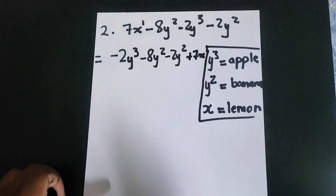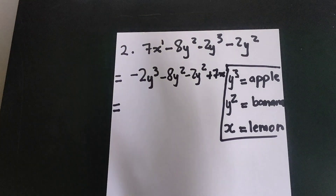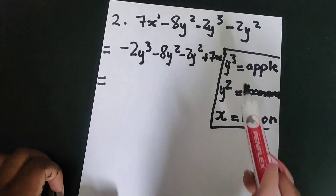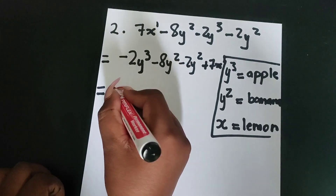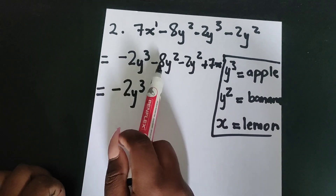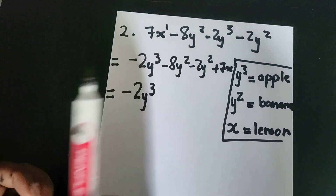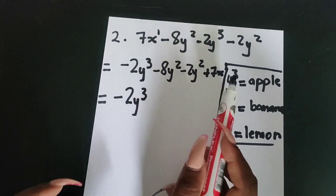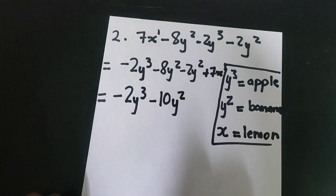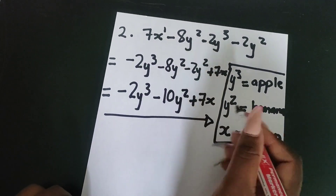Don't forget to erase this, otherwise the person marking your scripts will be confused. So now we're adding our apples together, bananas together, and lemons together. Our apples only have this negative two y cubed, so we just bring it down — there's no other apple: negative two y cubed. And then our banana: we have negative eight y squared minus two y squared. The signs are the same, so we're just going to add them. Eight plus two is ten, and both signs are negative, so we say negative ten y squared. And then we have our lemon, which doesn't have another counterpart: just seven x. And that is your answer.